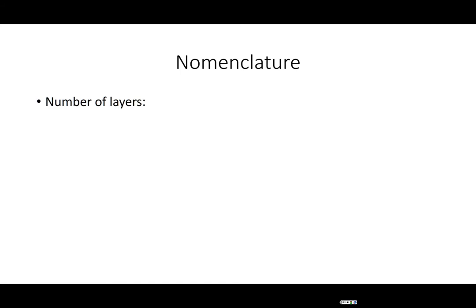As we name our epithelial tissue, we will see that it typically falls into the pattern of having two names. The first name tells you the number of layers. If you have a simple epithelium, that means it is a single layer of cells. If it is a stratified epithelium, that means it's layered — two or more layers of cells stacked one on top of the other.